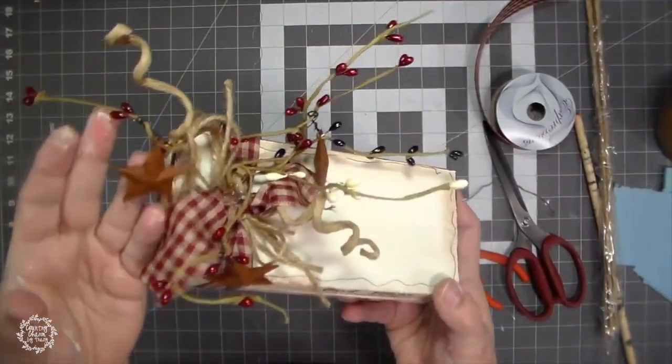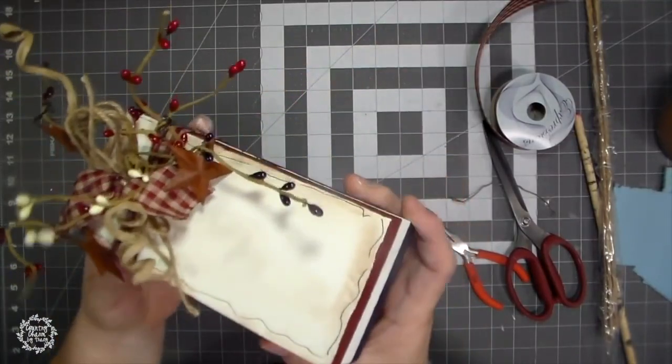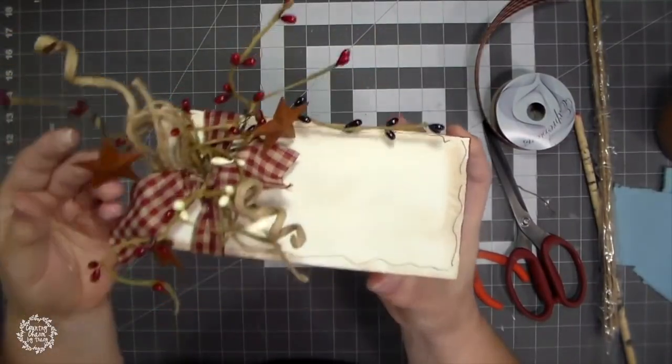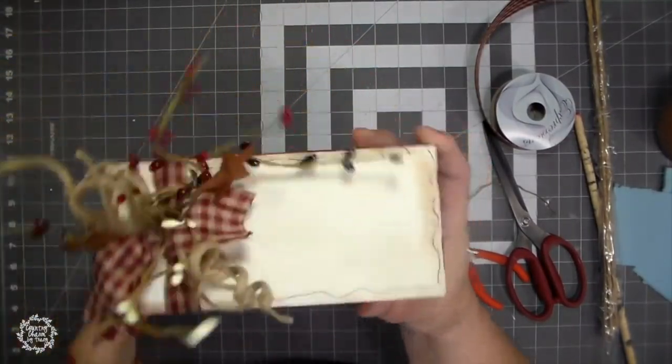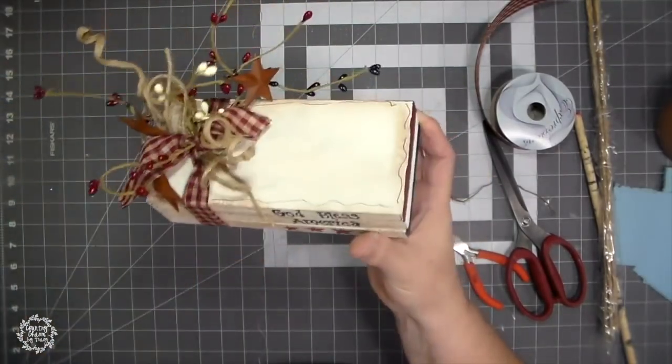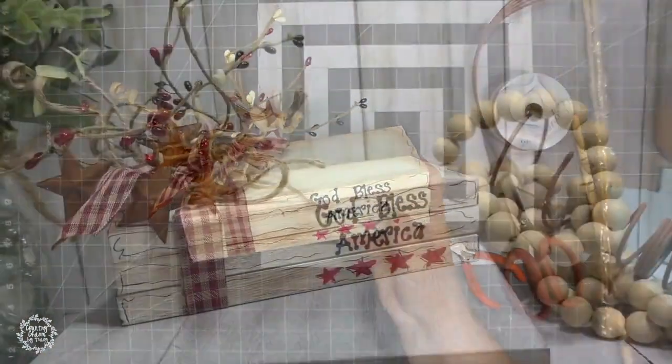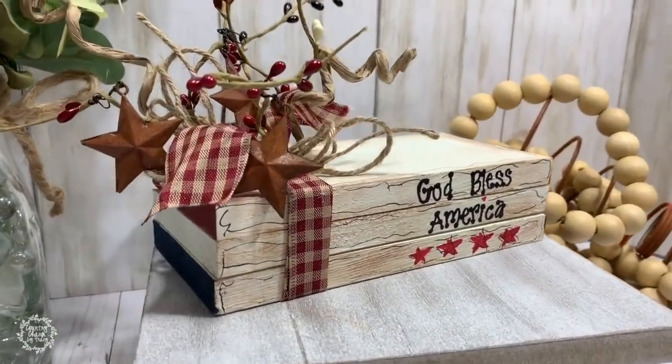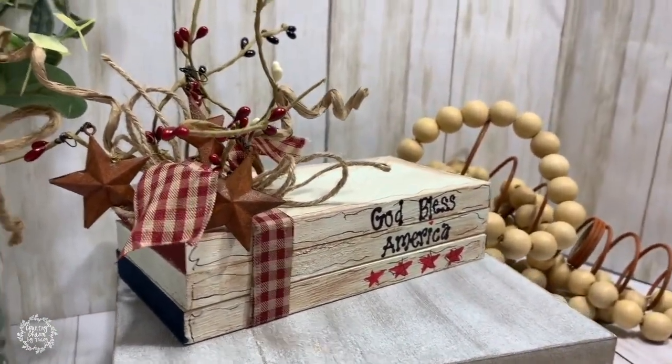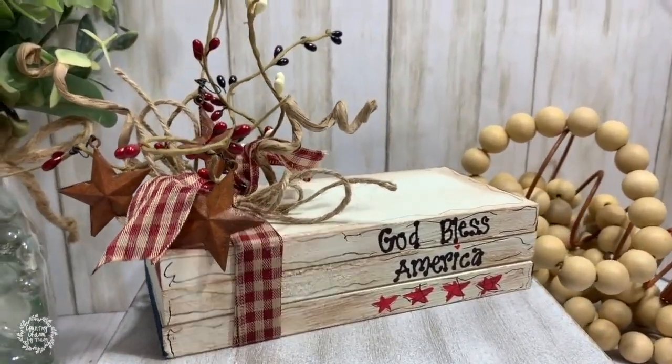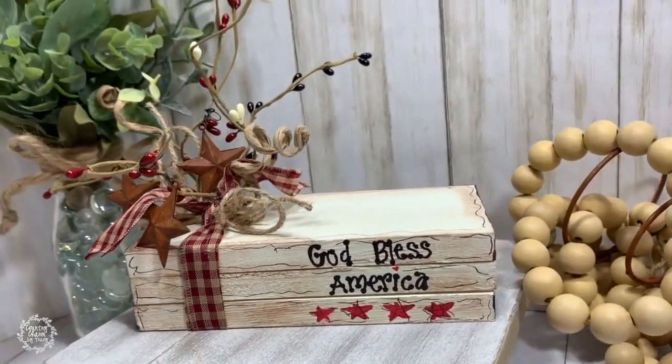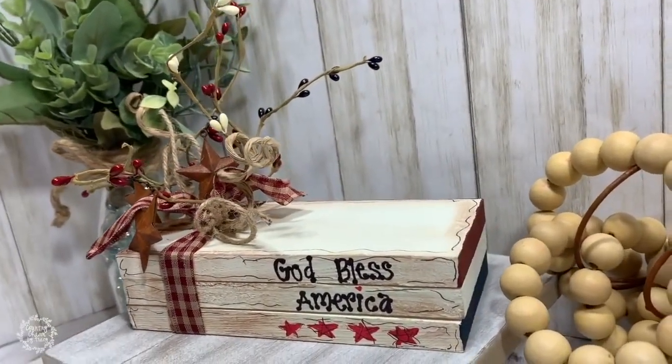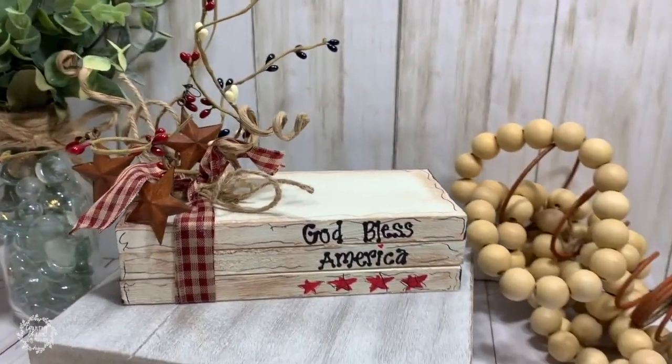I added three rusty star miniature ornaments. These little ornaments came from the miniature Christmas section at Hobby Lobby and I just had them on hand. I think Hobby Lobby still has them during the Christmas season and they just really dress up my rustic country projects.